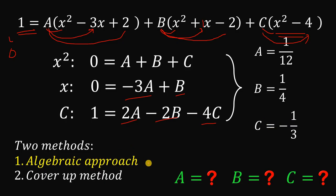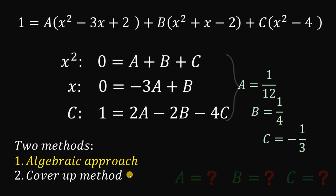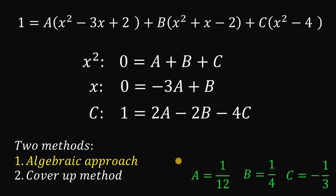Now we are not interested in this algebraic approach. Let's move on to our favorite, which is the shortcut one, called the cover-up method. Using the algebraic approach, we confirmed A equals 1 over 12, B equals 1 over 4, and C equals negative 1 over 3. Now let's proceed to the cover-up method.